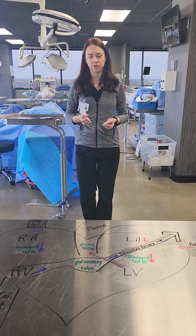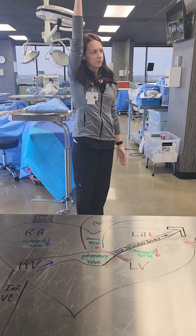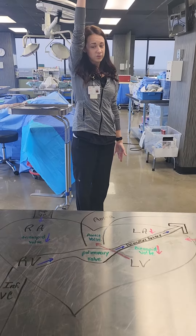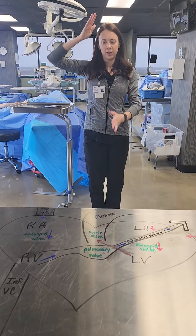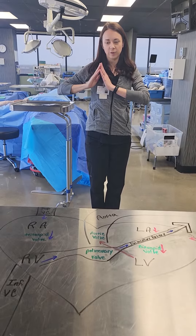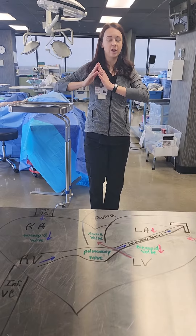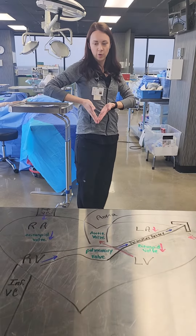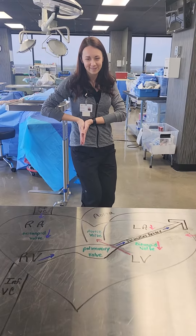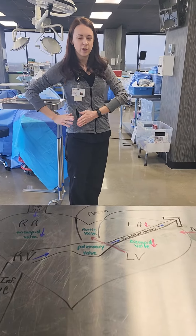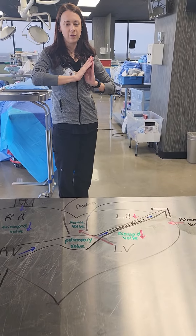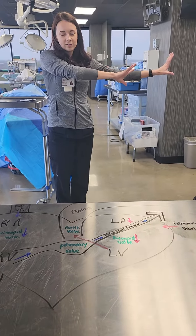Blood flow of the heart. You start with the superior and inferior vena cava. That deoxygenated blood rushes through and it lands at your right atrium. From the right atrium, it goes through the tricuspid valve into the right ventricle. That right ventricle is going to squeeze and push the blood up. From there, it goes through the pulmonary valve and then out to the lungs.